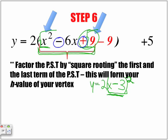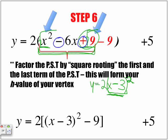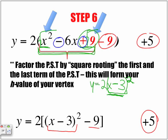And again, this is what your next step is going to look like. Here's our perfect square trinomial that we've achieved. But let's not forget we have the minus nine, and let's not forget this plus five, which we are going to put off to the side.